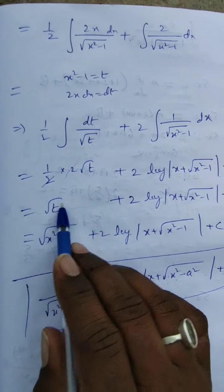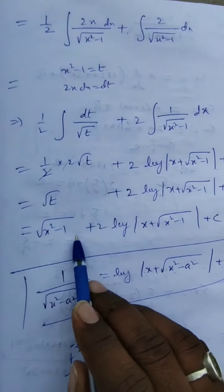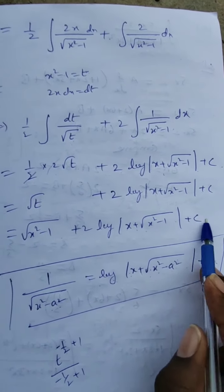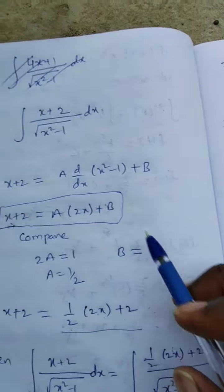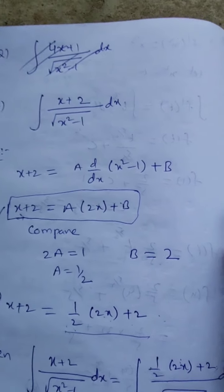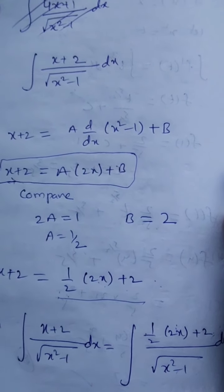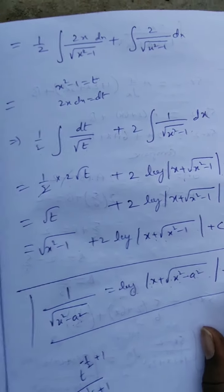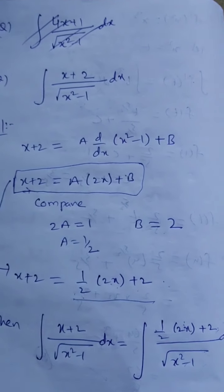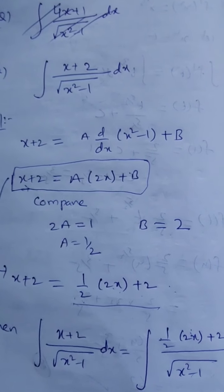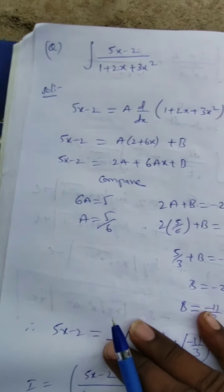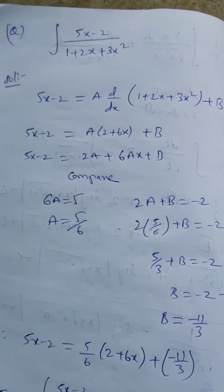Replacing t with x² - 1, the final answer is √(x² - 1) + 2 log|x + √(x² - 1)| + c. These types of problems are mostly seen in CBSE and board-level questions — not for JEE Advanced or Main level. I thought you should know all types of models, so I am explaining these. Let us see another question in the next video.